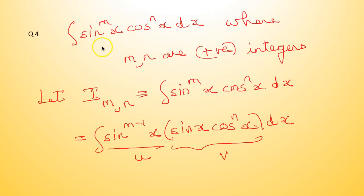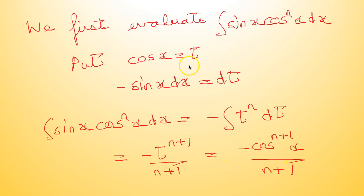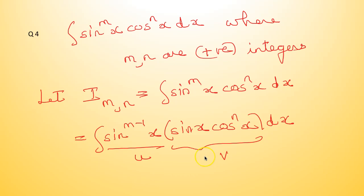This is the reduction formula for integral sin raised to mx · cos raised to nx dx, where m and n are positive integers. We call this I_{mn} and write it as integral of sin^(m−1)x · sin x · cos^nx dx, with sin^(m−1)x as u. We first evaluate integral sin x · cos^nx dx: putting cos x = t gives −sin x dx = dt, so it becomes −∫t^n dt = −t^(n+1)/(n+1) = −cos^(n+1)x/(n+1).